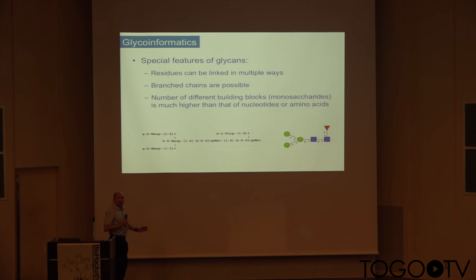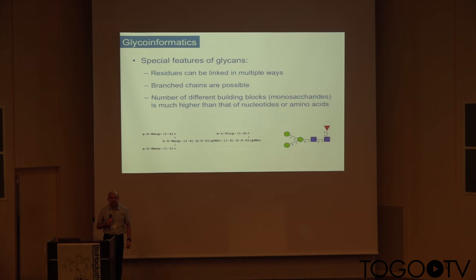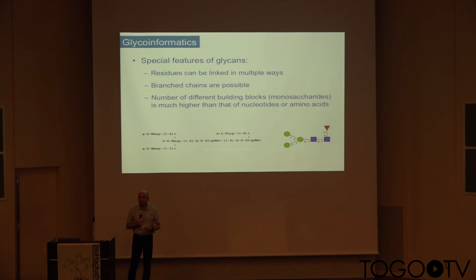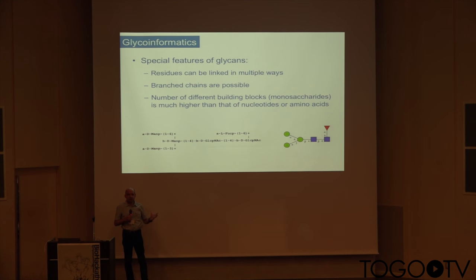From this, glycoinformatics has evolved as an area in bioinformatics to deal with carbohydrates. It has special features that differ from genes and proteins. First, the building blocks — the monosaccharides — can be linked in multiple ways. You don't have the same kind of linkage all the time as in a protein; the peptide bond is always the same, whereas here you can have 1,3-, 1,6-, or 1,4-linkages. This also means that glycans can be branched and not just linear.